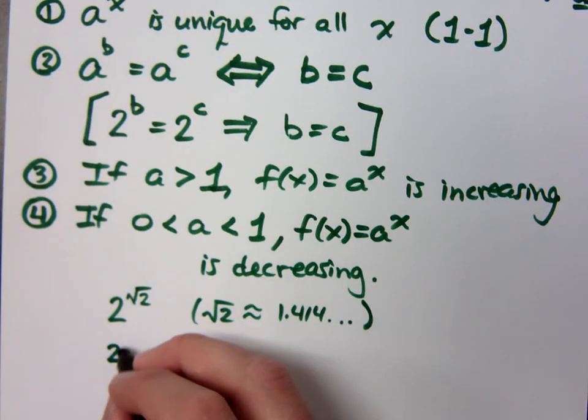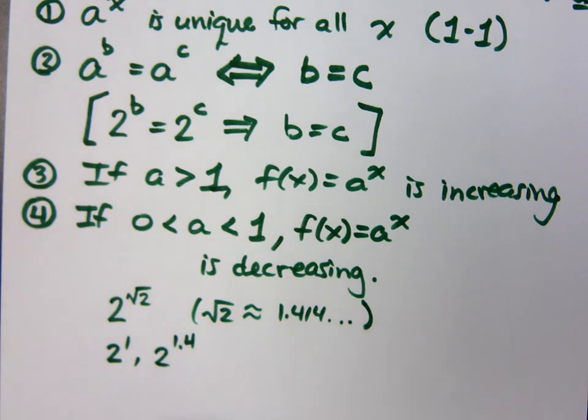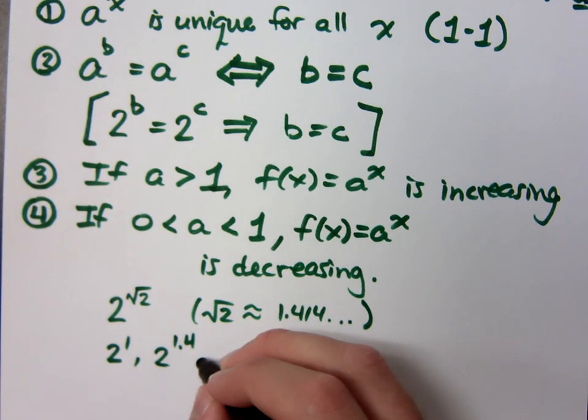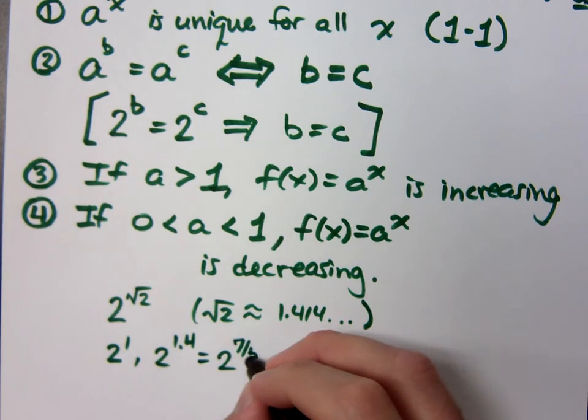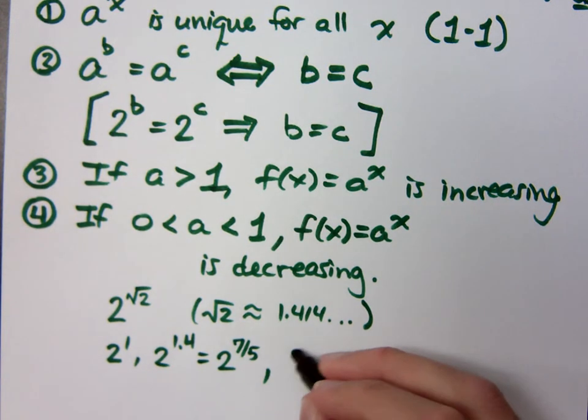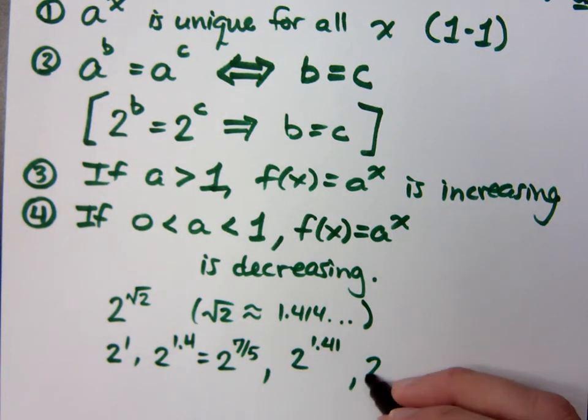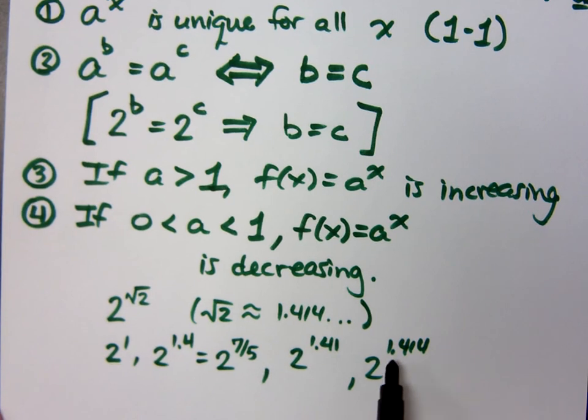So that means if I want to evaluate this, I can start off with what is 2 to the 1st? I can figure that out. What's 2 to the 1.4? I can figure that out because the 1.4 is really 2 to the 7 fifths. I can do 2 to the 1.41. I can do 2 to the 1.414.